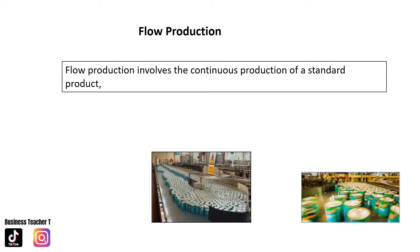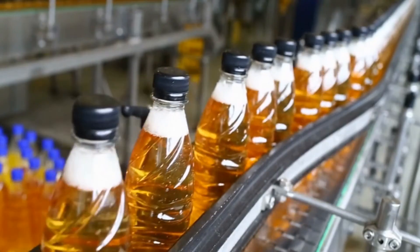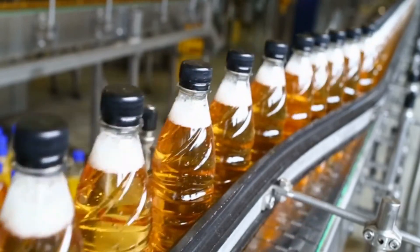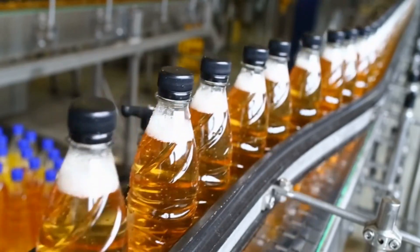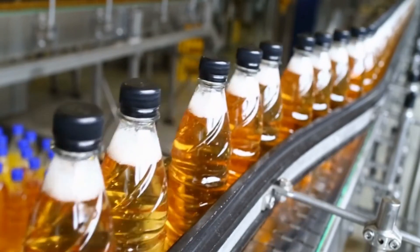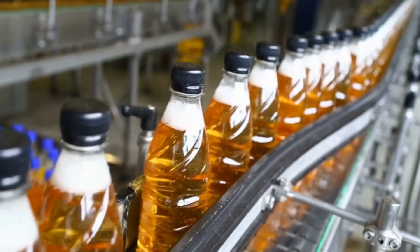Workers tend to be working at various stages of the process. Flow production is sometimes called mass production as it tends to be used for the mass production of many standardised products.